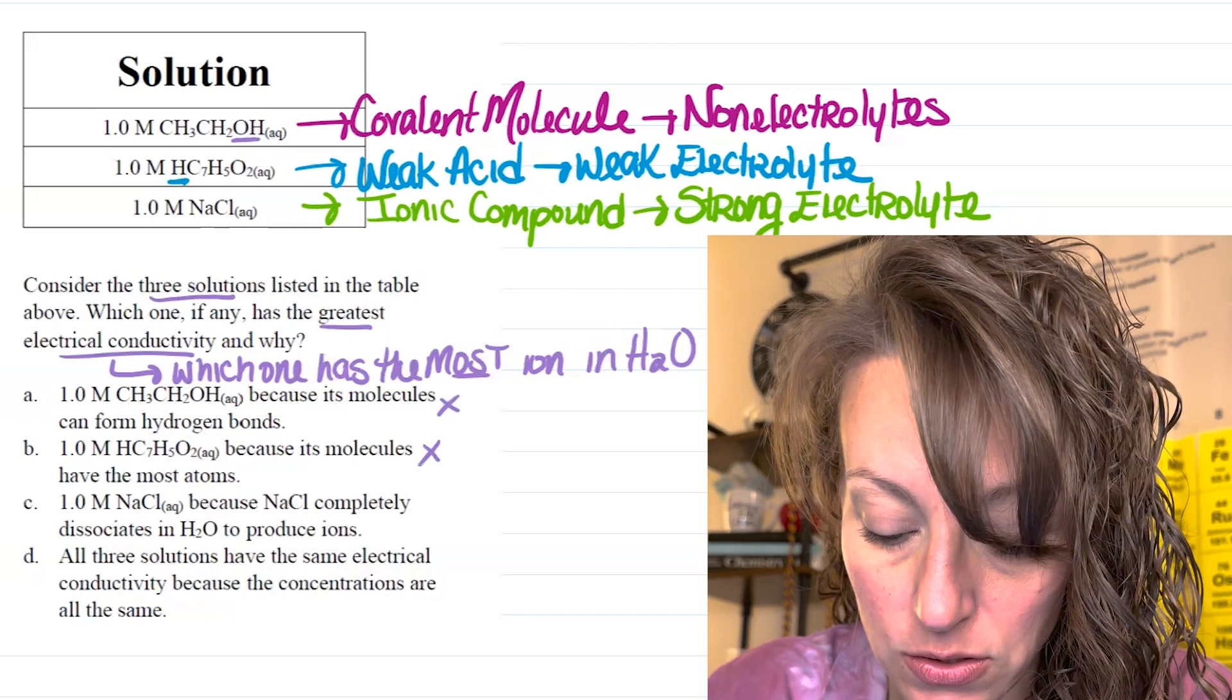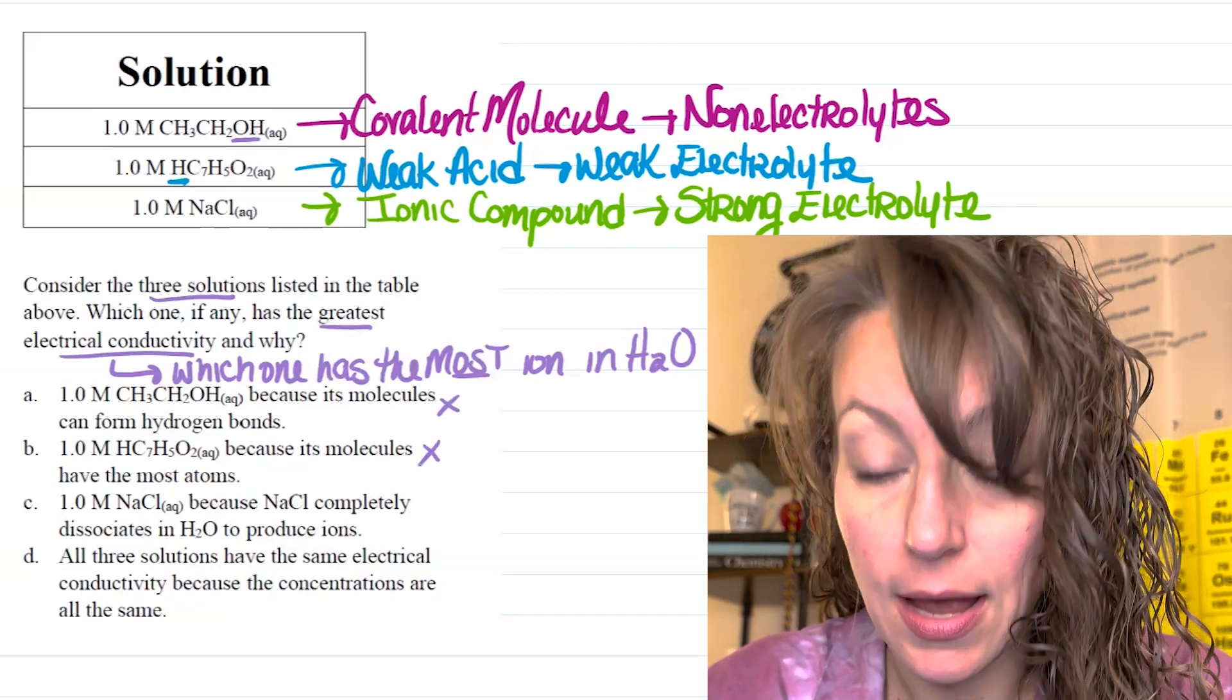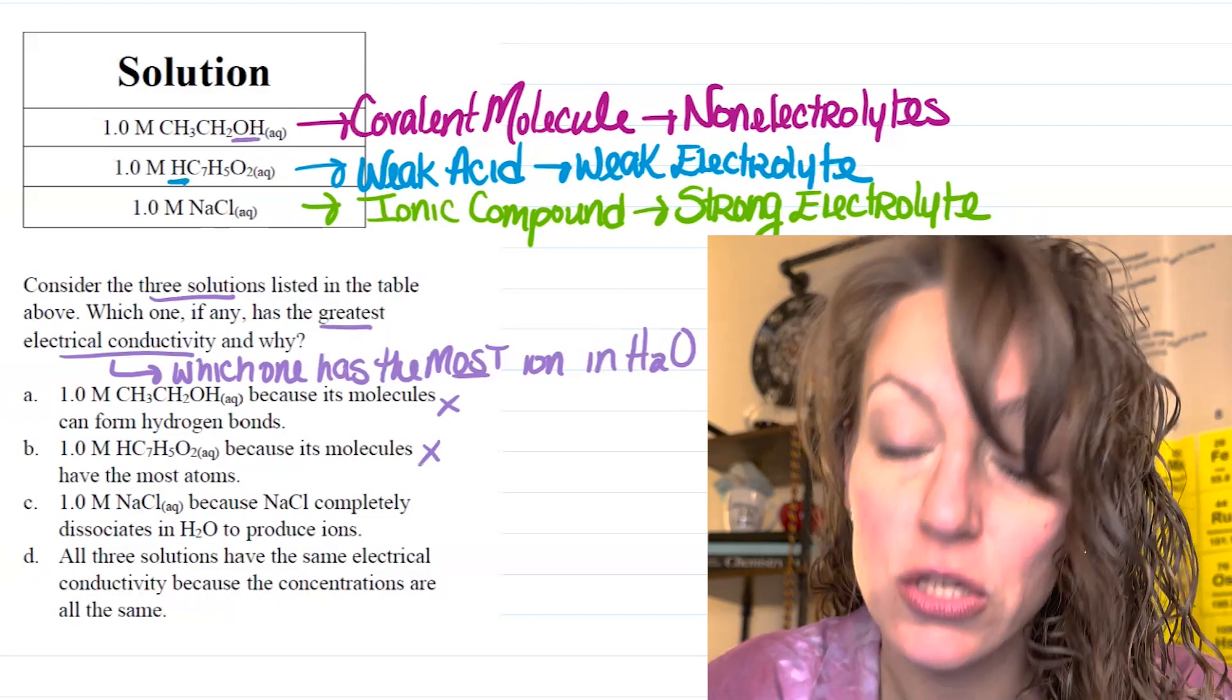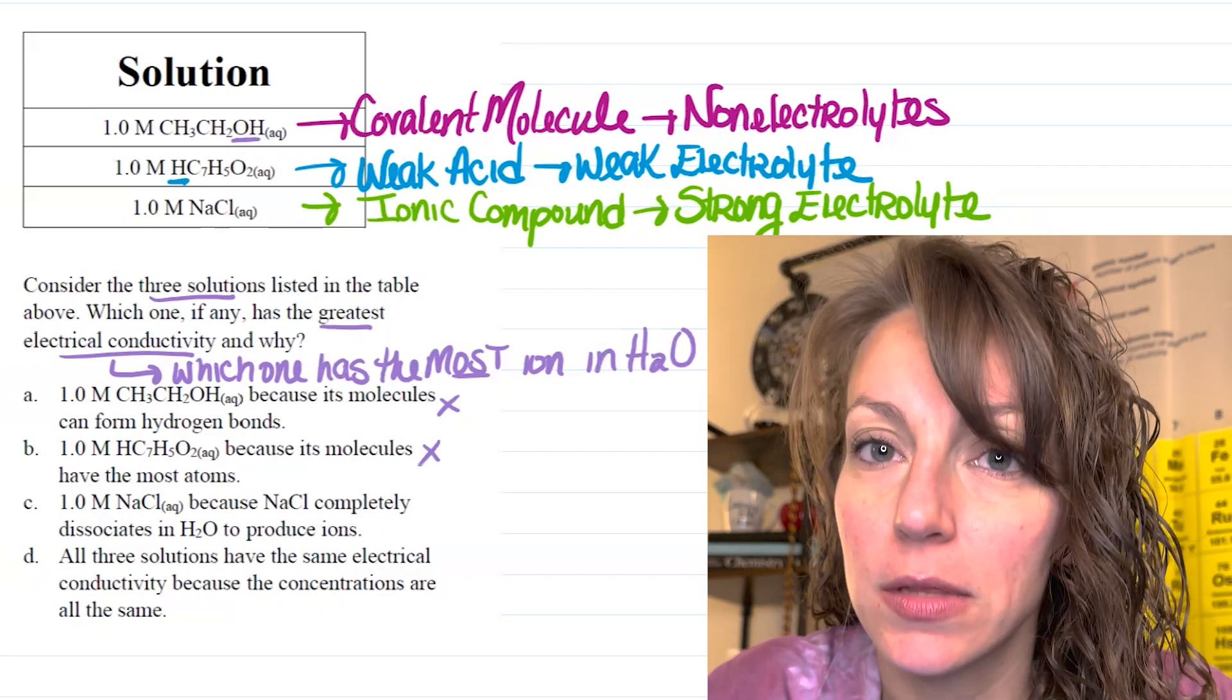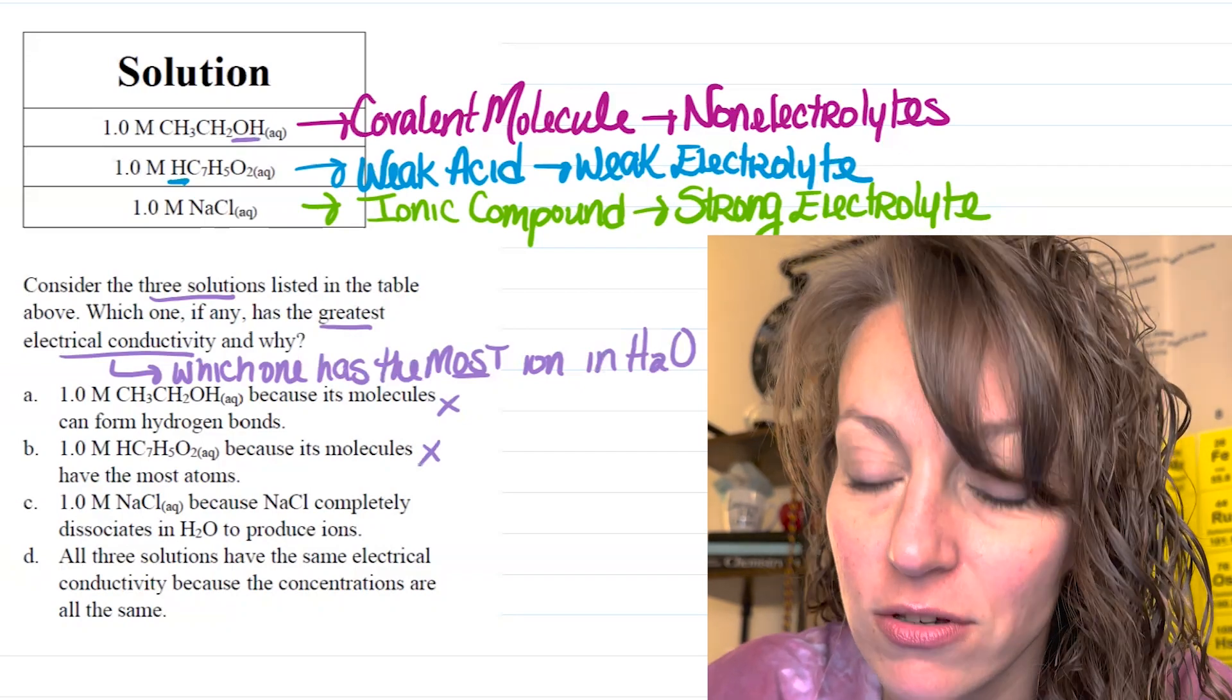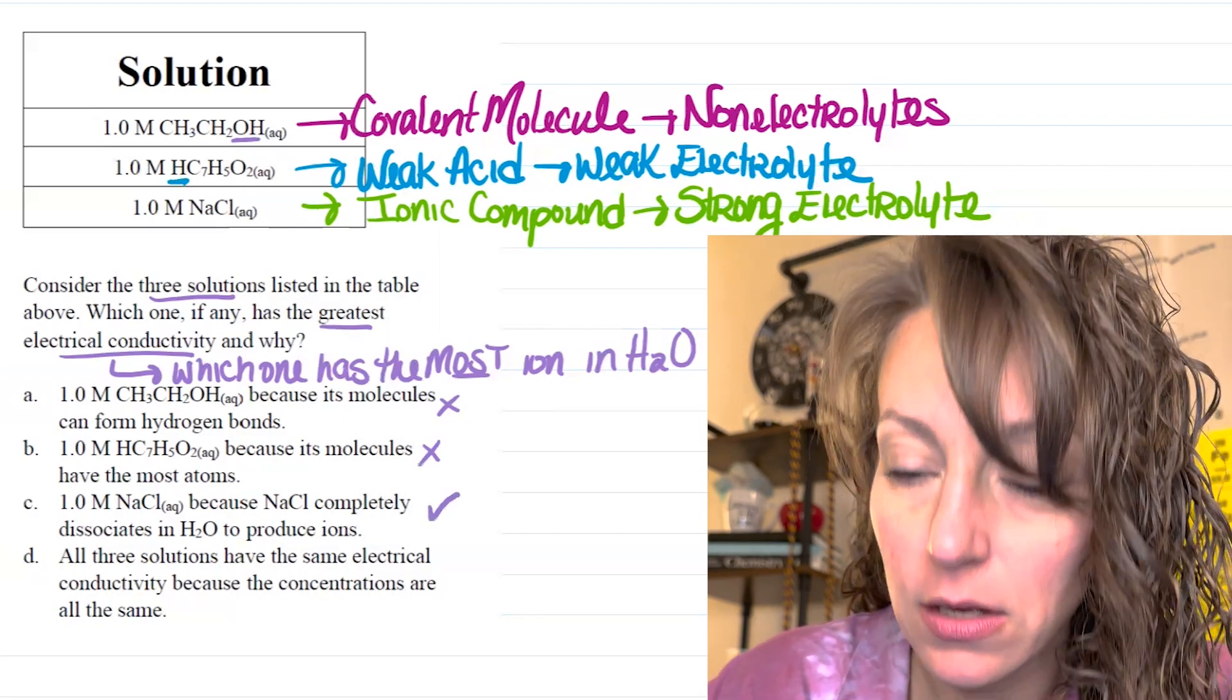Letter C states that 1.0 molar NaCl because NaCl completely dissociates in H2O to produce ions. There's the key. The more ions produced, the greater the electrical conductivity. So, I like letter C.